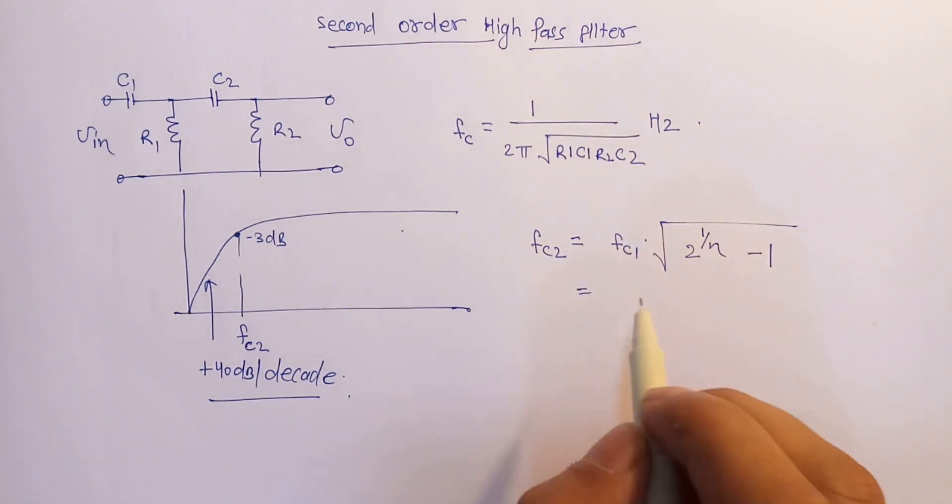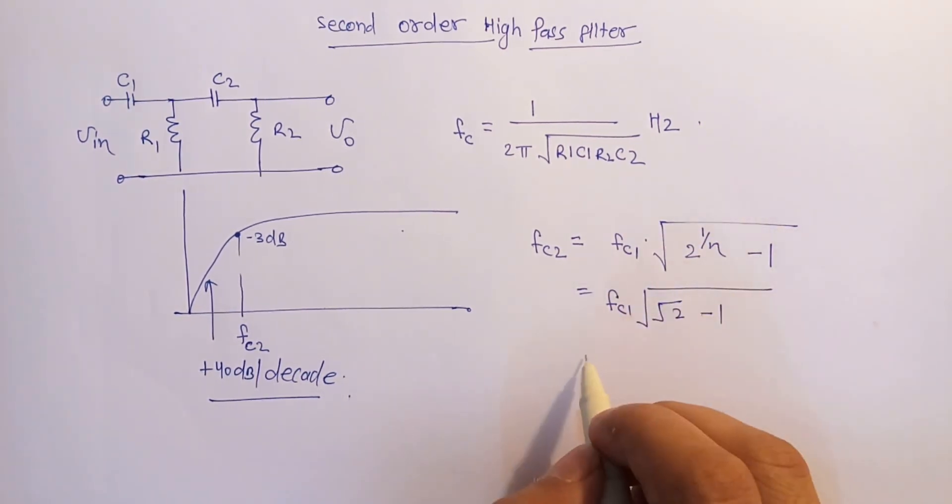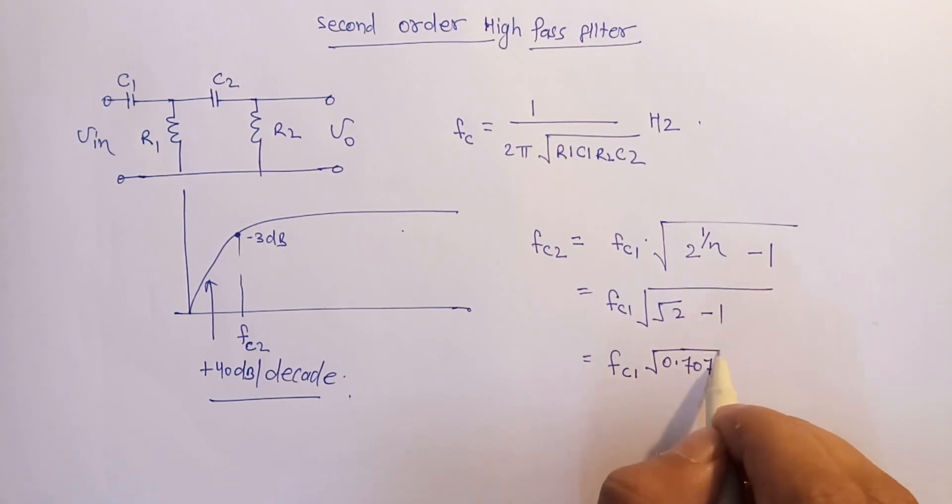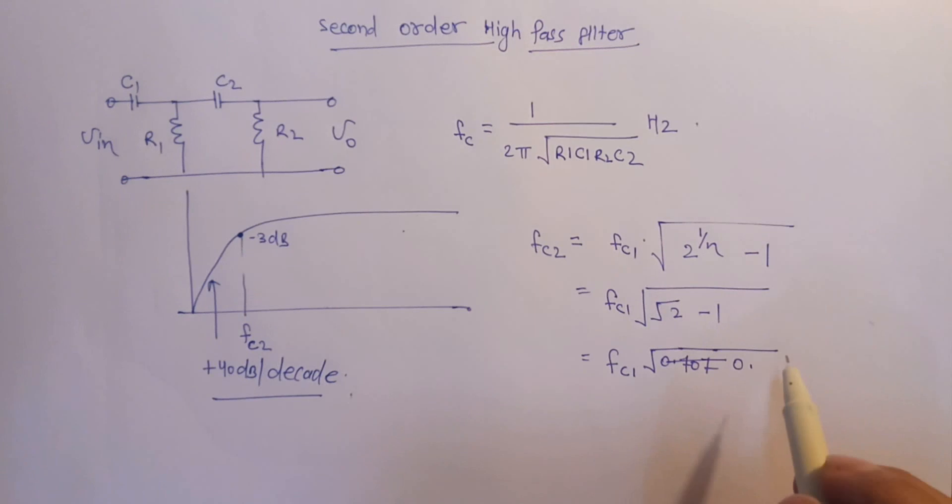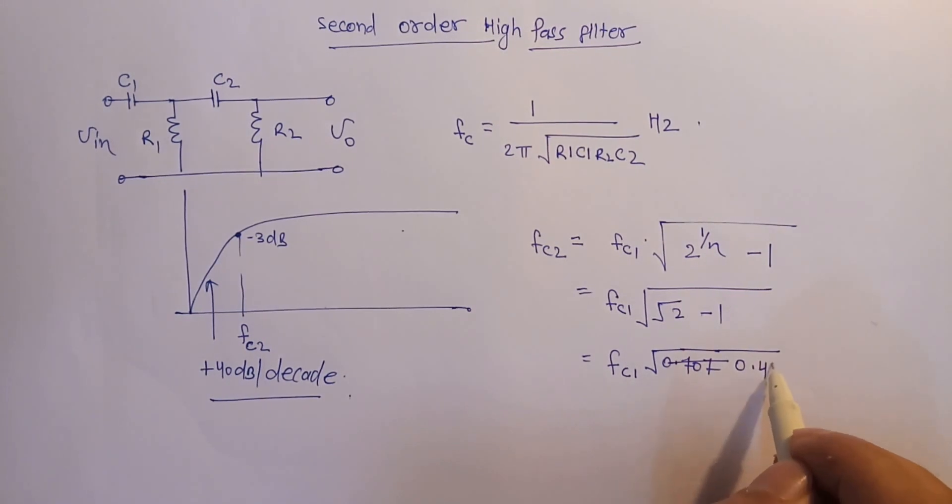upon n minus 1. So here n is 2, it will be FC1 under root 2 to the power 1/2 minus 1, that is equal to FC1 then under root 0.414.